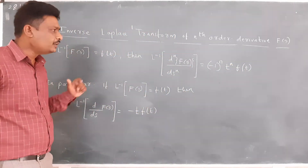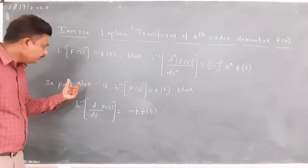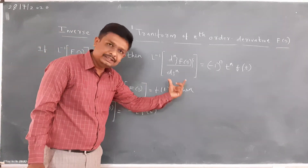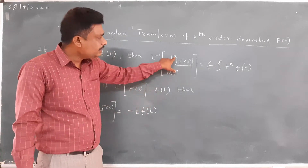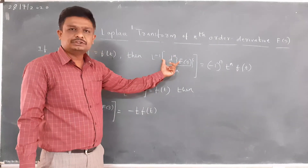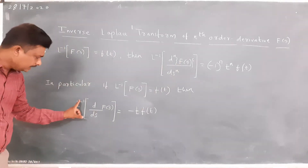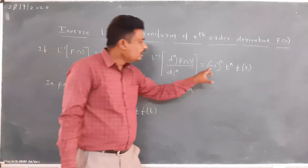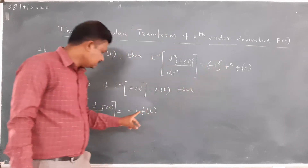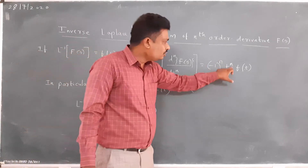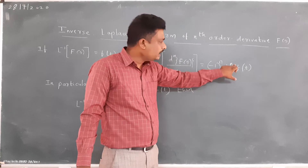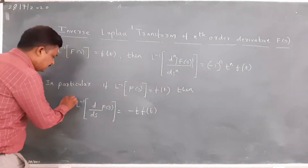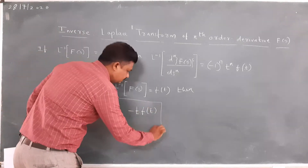In particular, if L⁻¹{f(s)} = f(t), I will put n equal to 1 so it becomes the first-order derivative. It becomes L⁻¹{d/ds f(s)} = (-1)¹ · t¹ · f(t), which is equal to minus t into f(t). So while solving examples I am going to use this result.